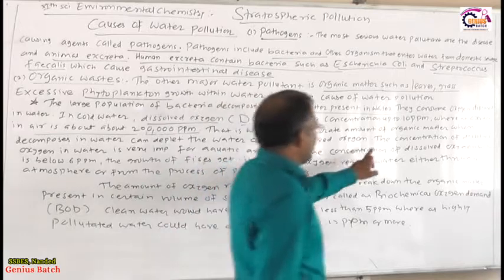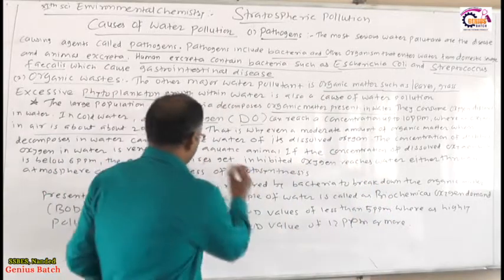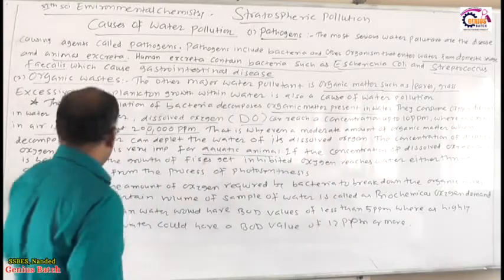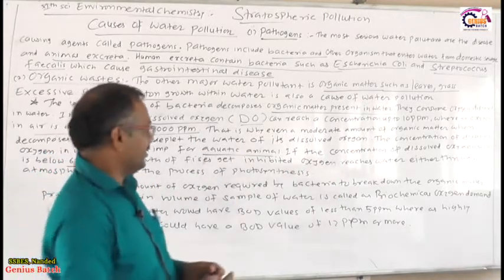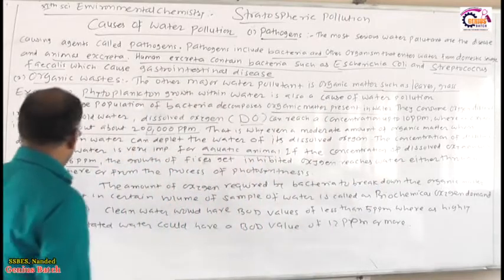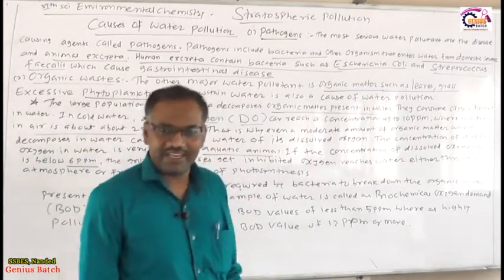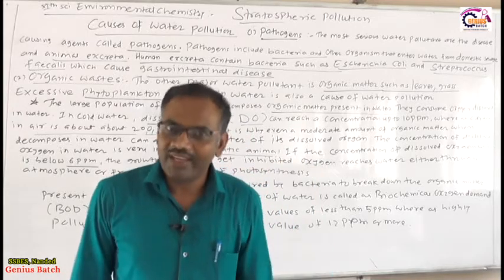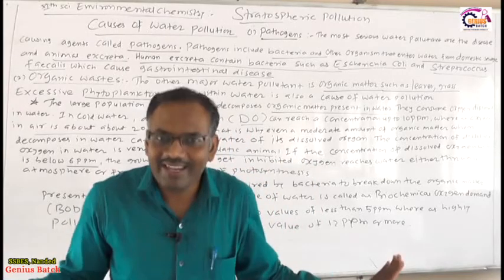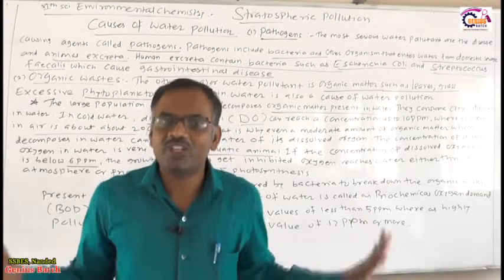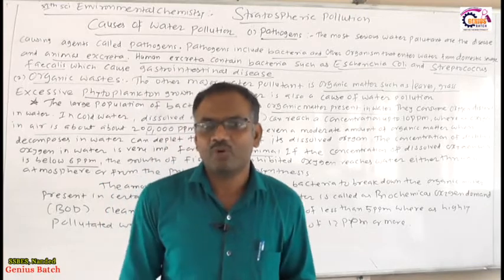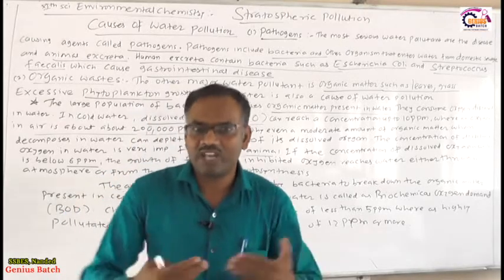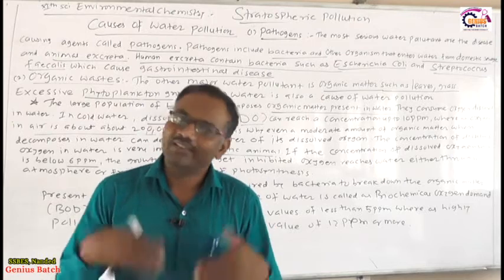The concentration of dissolved oxygen in water is very important for aquatic animals. If the concentration of dissolved oxygen falls below 6 ppm, the growth of fish gets inhibited. Therefore, dissolved oxygen must be more than 6 ppm. If organic matter is decomposed by microorganisms, dissolved oxygen in sea or cold water gets reduced and fish will be damaged.